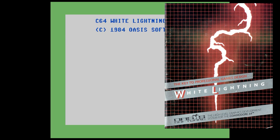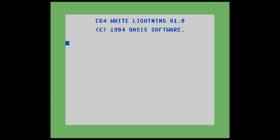Hi, and welcome to another video in my Programming White Lightning on the Commodore 64 series. This video is going to talk about how to compile code for use with White Lightning. I highly recommend watching the previous videos in this series, as this video might not make a whole lot of sense out of context.